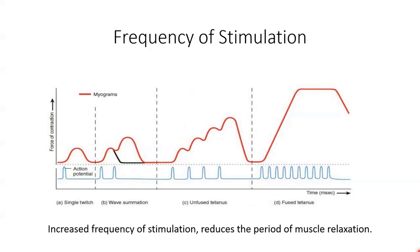We then have the frequency of stimulation, or how often a muscle fibre receives an action potential from a motor neuron. Looking at this graph, the x-axis shows the different types of stimulation and the y-axis shows the force of a muscle contraction. The first part of the graph shows a single muscle twitch — the brief contraction of all muscle fibres innervated by a single motor unit in response to a single action potential, producing a small amount of force.